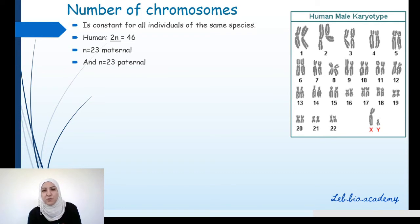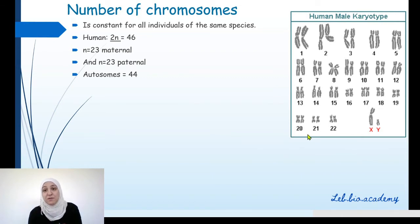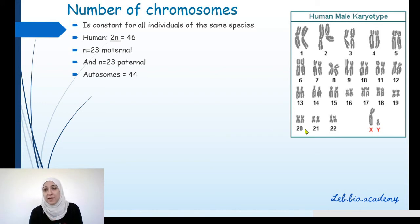If they ask you about the number of chromosomes in a normal human, your answer should be 2n equals 46 chromosomes. In these 46 chromosomes, the first 22 pairs — pay attention — all these chromosomes with a number below are called autosomes, and they are common between males and females. So either we say the 22 pairs of chromosomes, or we say 44 autosomes.